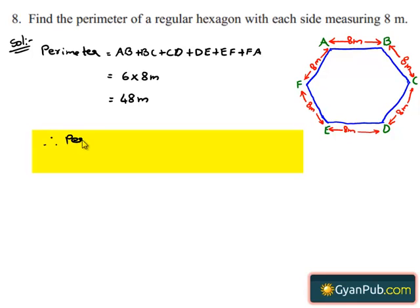Therefore, perimeter of the given regular hexagon is equal to 48 meters.